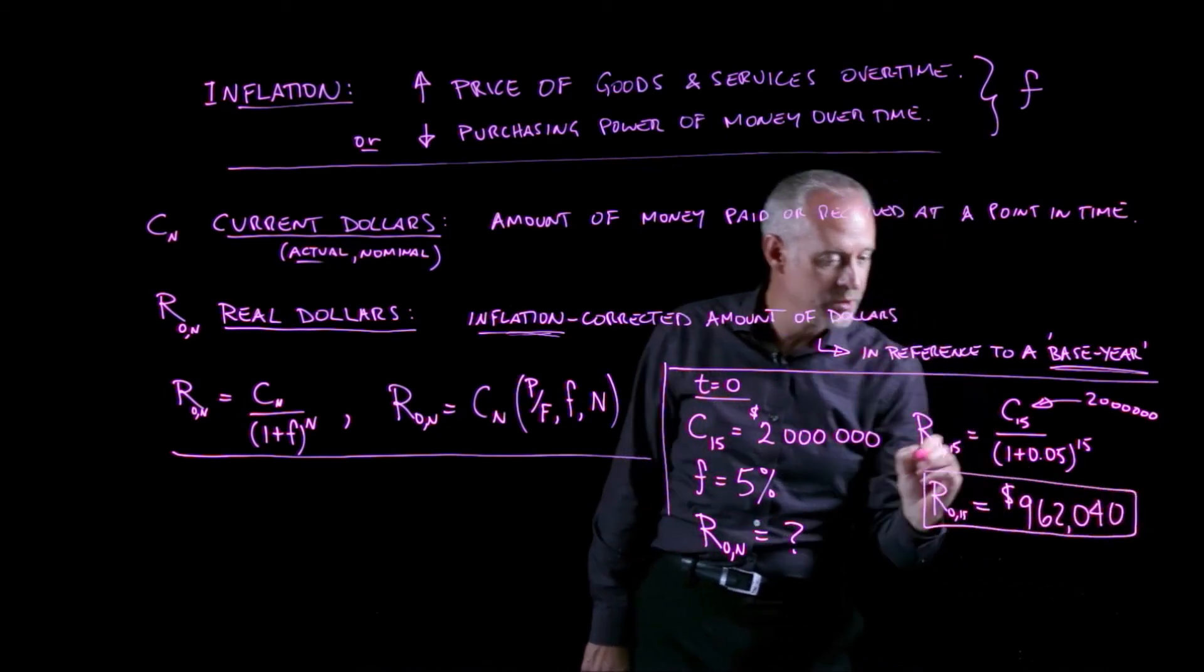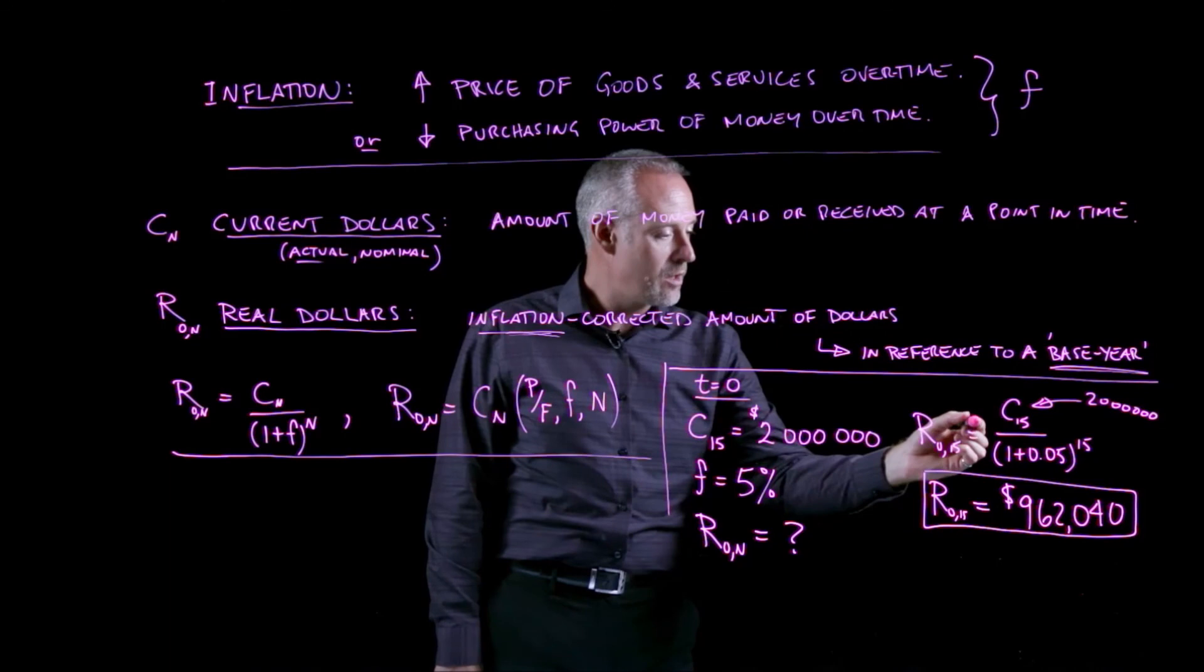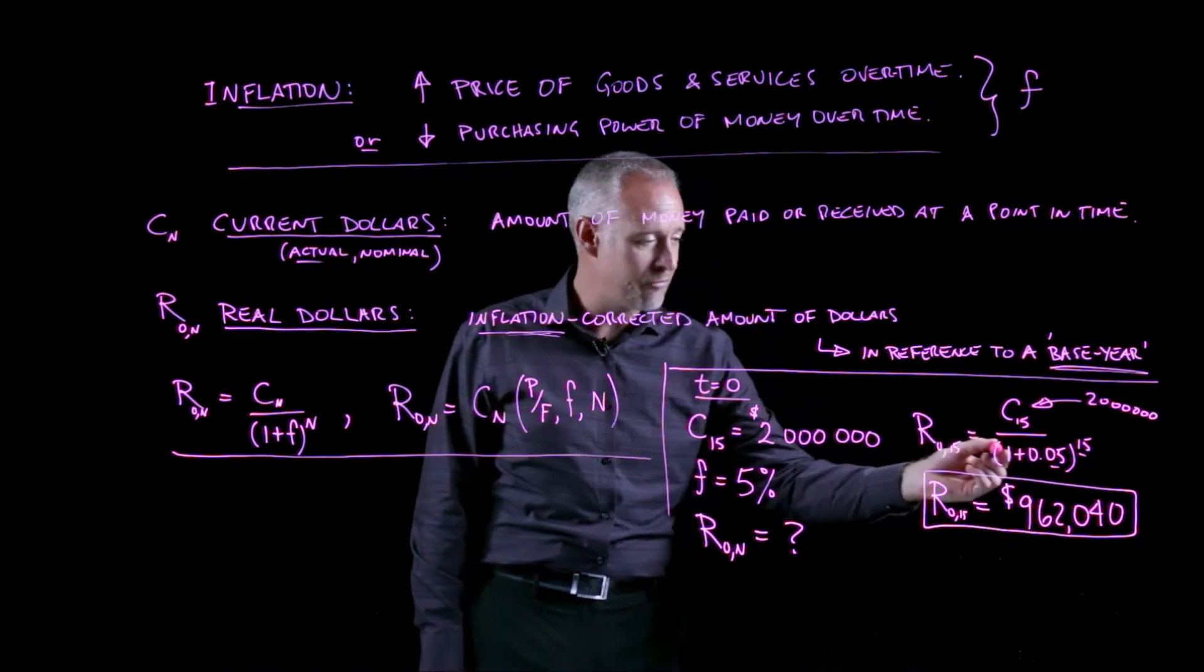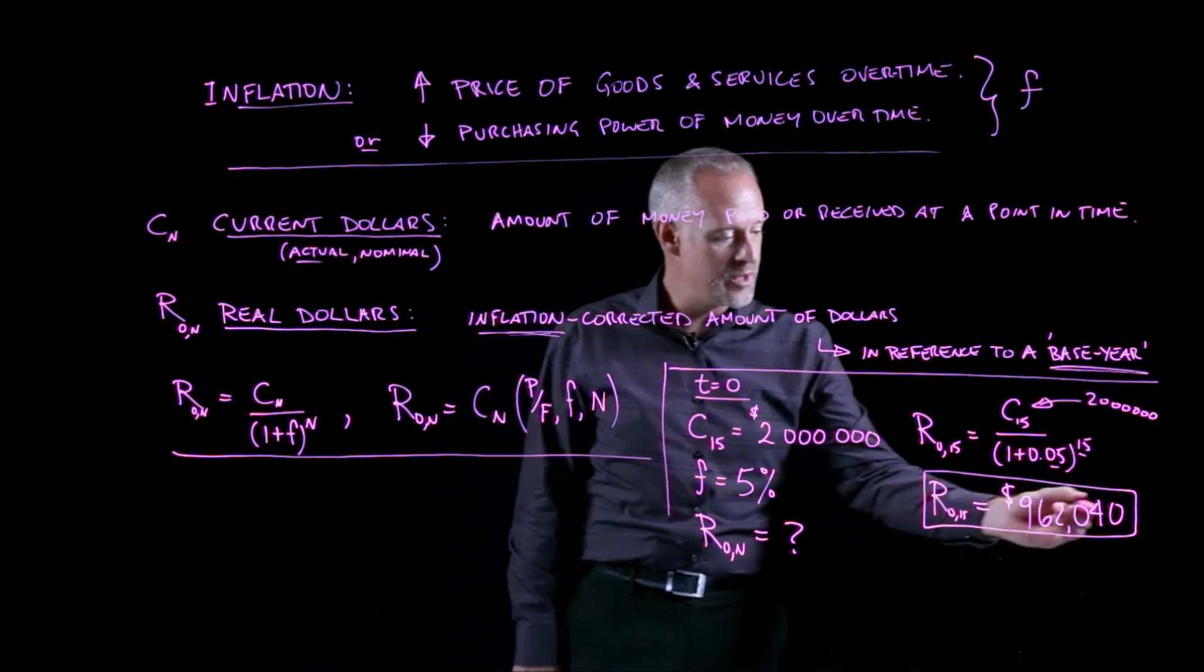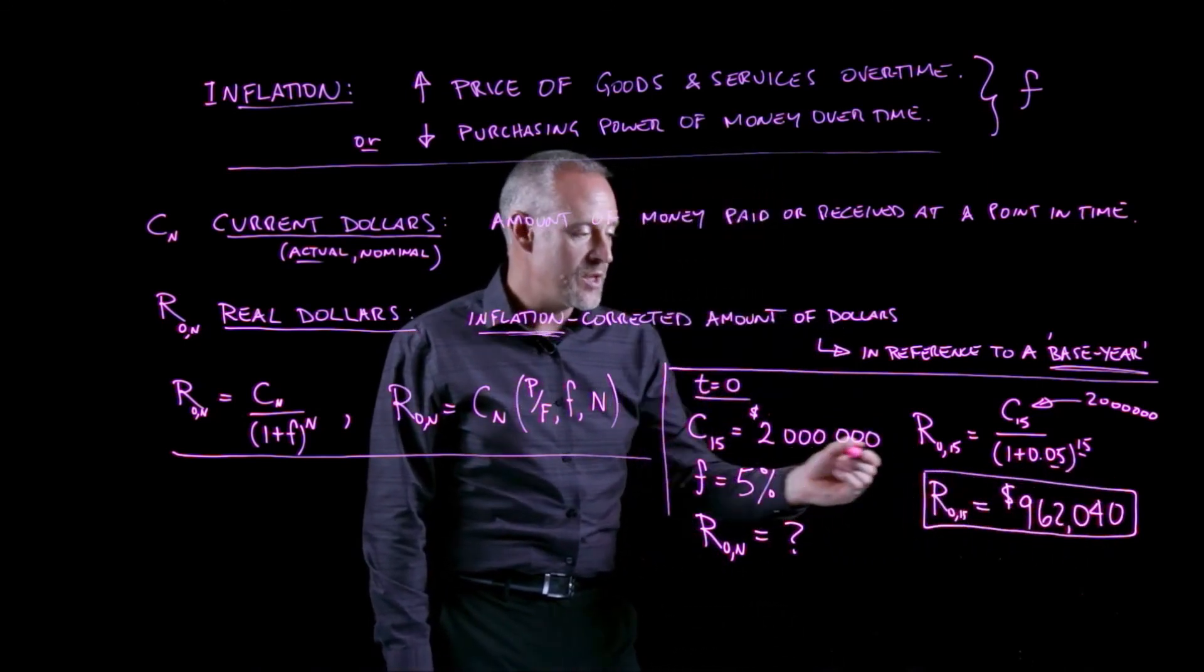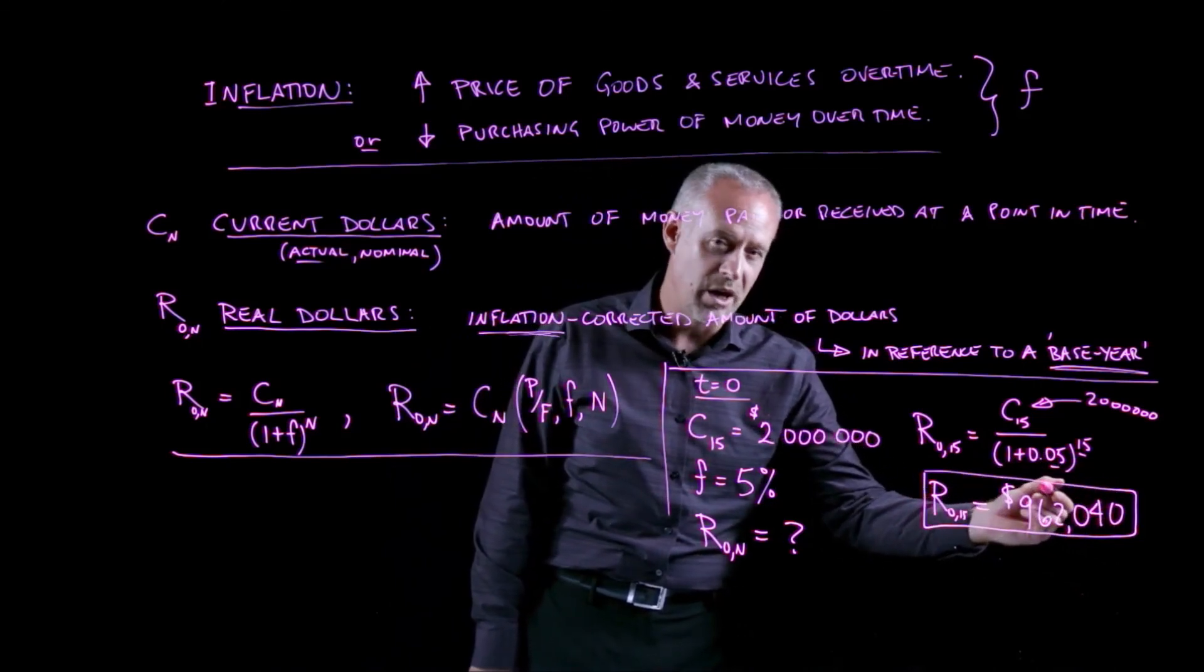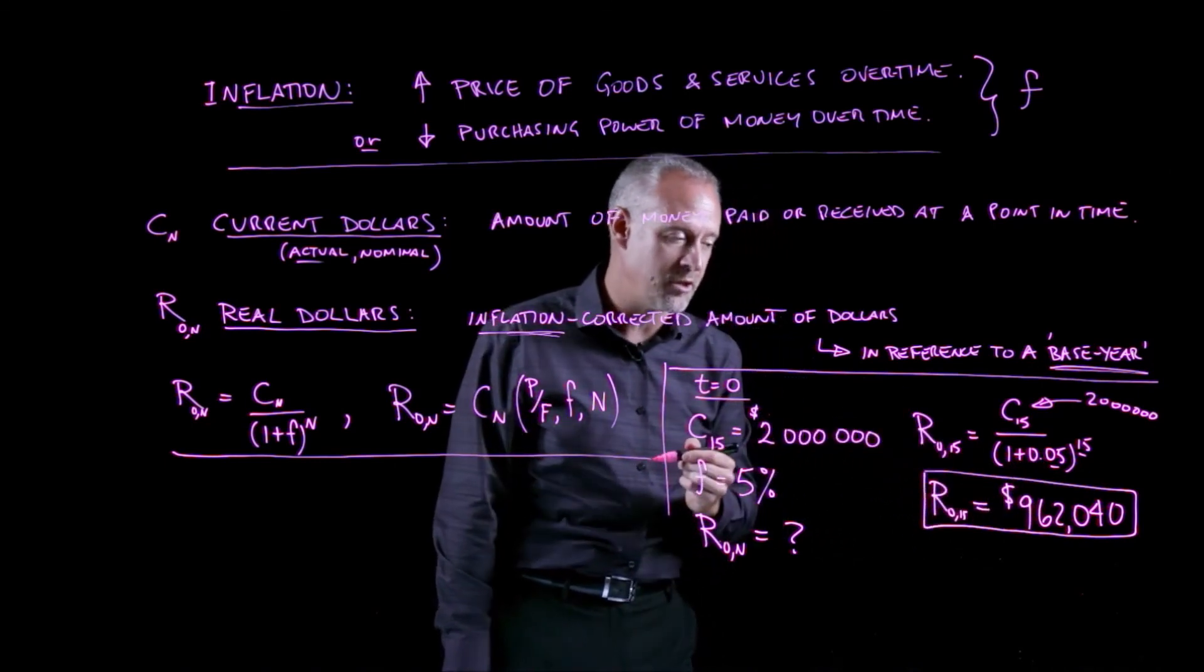We could also do this problem using the P given F factor for N equal to 15 and an I, or in this case an F, equal to 5. Either way, we'll end up with this value. And what that really represents is this is the equivalent today's dollar amount that would be required to buy equipment that costs 2 million dollars 15 years from now.